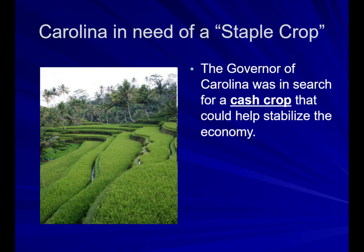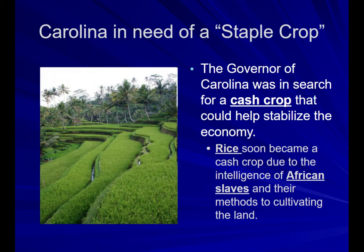Carolina is in need of a staple crop. They wanted to further expand the cash crops that they grew to help stabilize the economy, and so rice soon became a huge cash crop due to the intelligence of African slaves and their methods to cultivate the land.